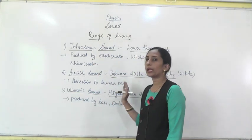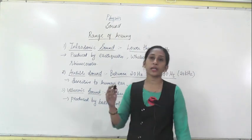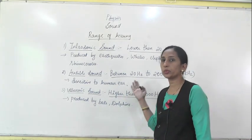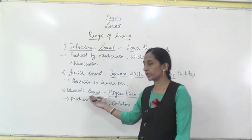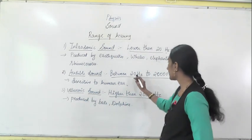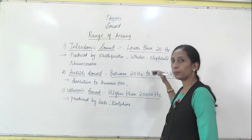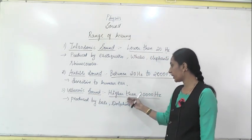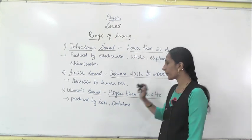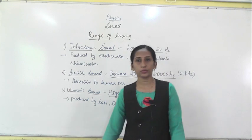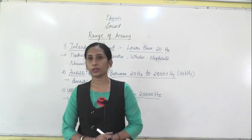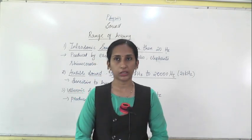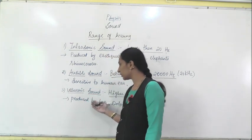The third range is ultrasonic sound. This is a high-level sound — it is more than 20,000 hertz. The frequency of sound which is more than 20,000 hertz is called ultrasonic sound. Our audible range is from 20 to 20,000 hertz, so we cannot hear sound higher than 20,000 hertz. Ultrasonic sound is produced by bats and dolphins. This sound is also heard by dogs, which is the reason why dogs are used for detective work — they can listen to such ultrasonic sound.